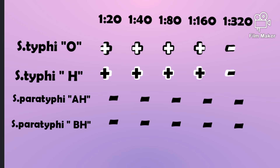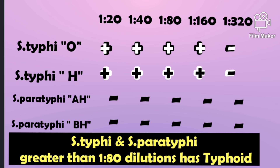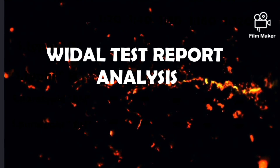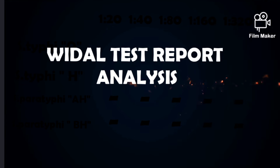In the next test report, you can see that the titer is positive up to 1:160 and S. paratyphi is completely negative. Here we can easily say that the person is typhoid positive, because the titer is greater than 1:80. So this test report shows that the person has typhoid. This is the basic thing you should understand about the Widal test report. Thank you for watching.